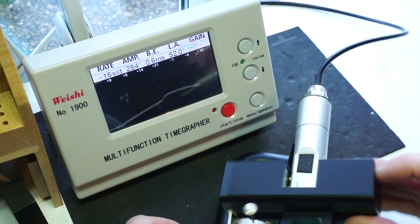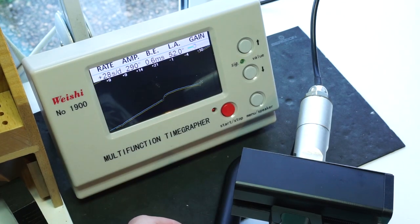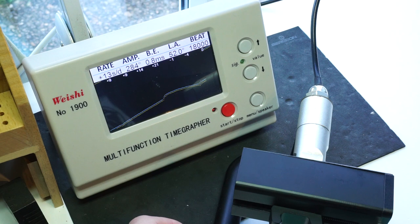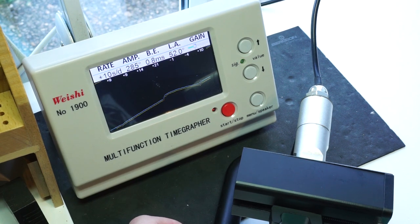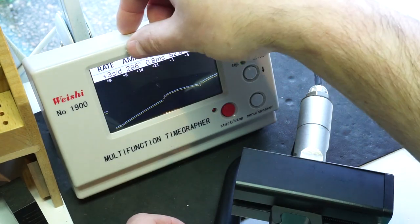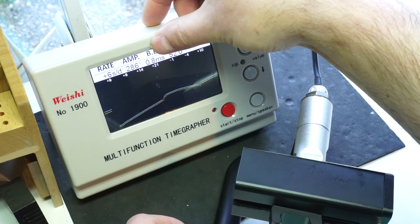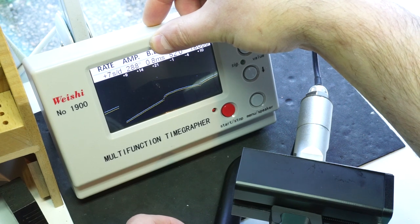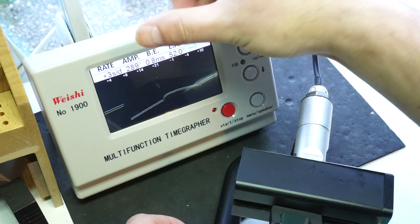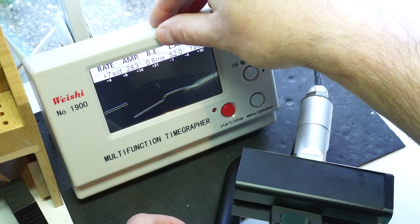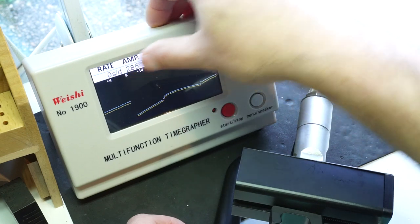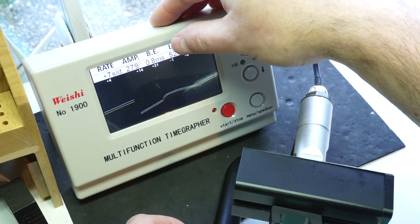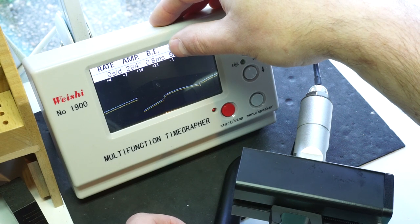And then we're going to do the pendant down. Allow that a few seconds to settle into its position. You will find some minor deviation between the different points here - the rate, the amplitude and the beat error. As we can see, the beat error has actually increased with the pendant facing down. That's something that can be addressed prior to fitting the movement back in the case. But the lines are still flat, which means there's no problem with the escapement so far. And the rate is pretty good. It's got zero seconds there, plus 4, plus 7, back to zero again.